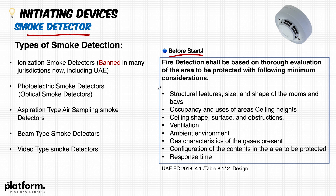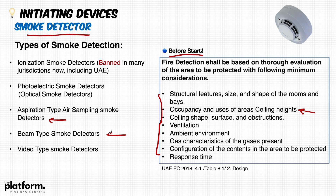Before we start, remember that when designing a fire alarm system there are many considerations for selecting the suitable type of smoke detection, depending on occupancy, ceiling shape, ventilation, ambient environment, gas characteristics in the area, and the height of the ceiling. The main types of smoke detection are: spot type, aspiration air sampling, beam detector, and video type smoke detector.